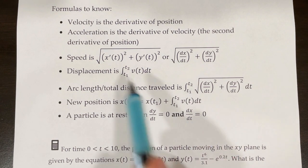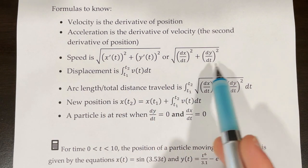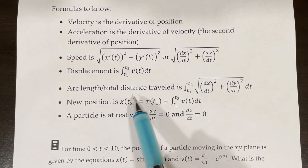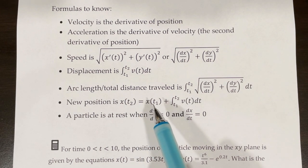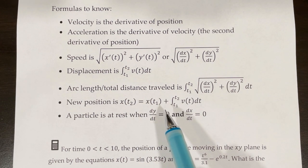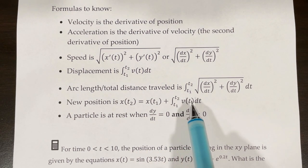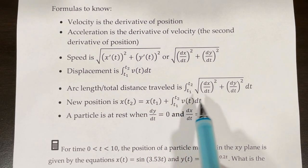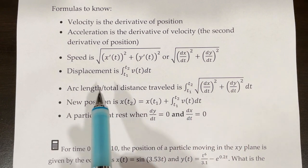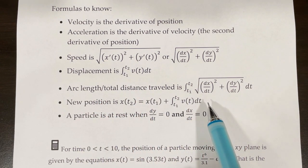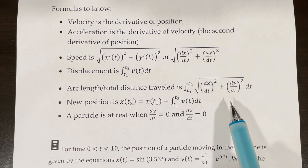Notice that the integrand is very similar to speed, and that makes a lot of sense. When we found the total distance traveled in former lessons, we would take the integral of the absolute value of the velocity. This is essentially what we're doing — we're taking the integral of the speed. Because we have the square root, we don't even need absolute value signs, since anything coming out of a square root is a positive number.